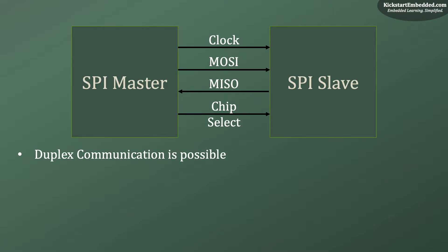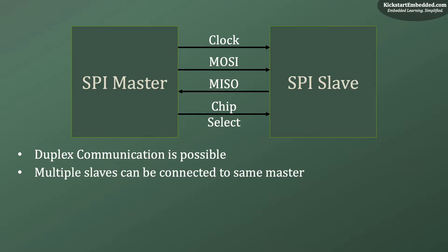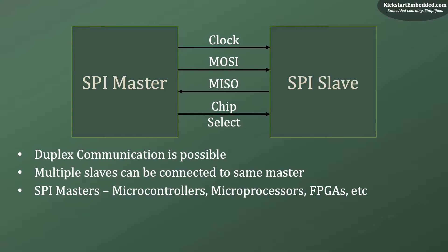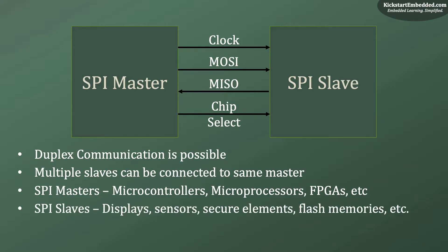One of the best features of this bus is that full duplex communication is possible, meaning the master and slave can exchange data at the same time. Another important feature is that due to the chip select mechanism, multiple slaves can be connected to the same master, but only one slave can and should talk to the master at a time. Typical SPI masters are microcontrollers, microprocessors, FPGAs, etc. Typical SPI slaves include displays, sensors, secure elements, and memories.